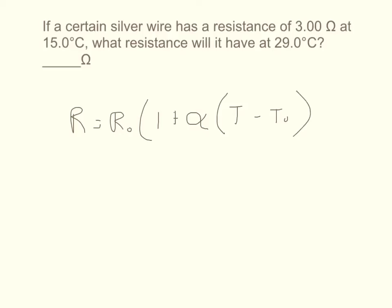So what are all these? Alpha is called the temperature coefficient of resistance. And this is basically like saying T final and T initial, or you could say the change of temperature.